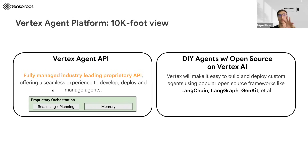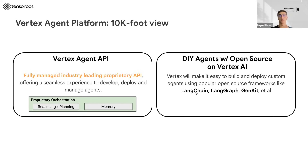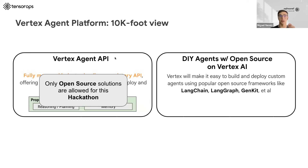I wanted to give an overview of the Vertex AI agent platform. On the left, we have a fully managed approach by Vertex AI — they have proprietary orchestration, reasoning, and planning, and you don't have to worry about it. But you can also do it with open-source software like Langchain and Langgraph. For the purpose of this hackathon, only open-source solutions are allowed, meaning you could not use the fully managed approach. You do not have to use Vertex AI specifically, but you can only use open-source in general.